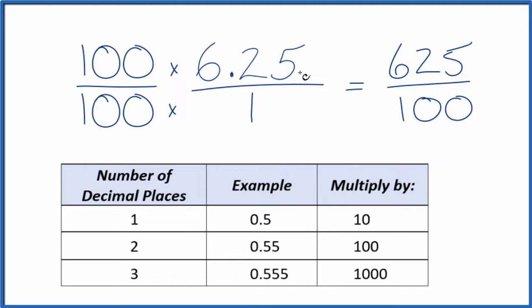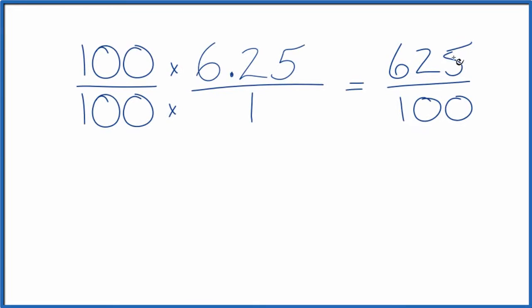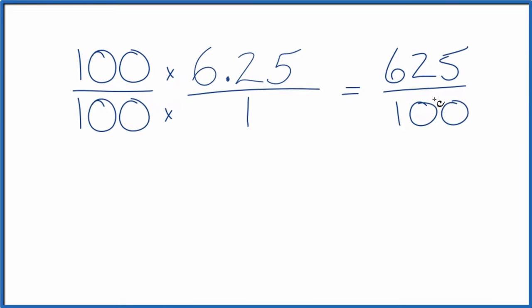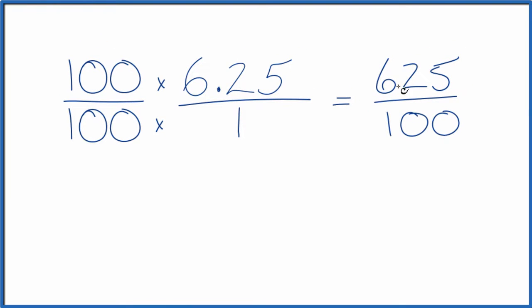The decimal 6.25 equals the fraction 625 over 100, but we can simplify this down to lowest terms. Let's do that. So I can divide 25 into 625 and 100 evenly. 625 divided by 25 equals 25. And then 100 divided by 25 equals 4.